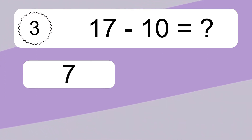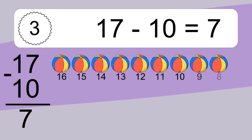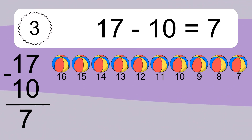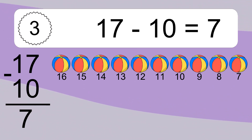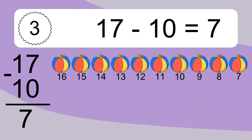17 minus 10 equals what? 17 minus 10 equals 7. Let's count it: 16, 15, 14, 13, 12, 11, 10, 9, 8, 7.